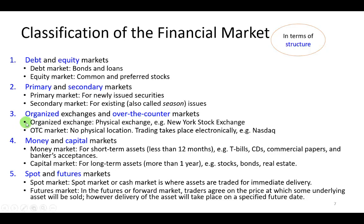Thirdly, we can describe financial markets as organized or over-the-counter. If it's organized, we're referring to a physical exchange — like the New York Stock Exchange, the Chicago Stock Exchange, the London Stock Exchange, and the Tokyo Stock Exchange. Over-the-counter means that trading takes place electronically, like the NASDAQ, which is an acronym for National Association of Securities Dealers Automated Quotation.